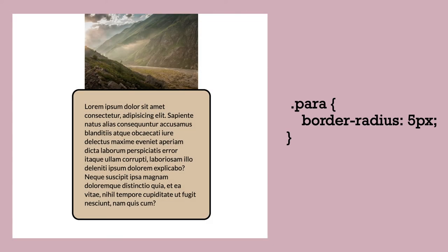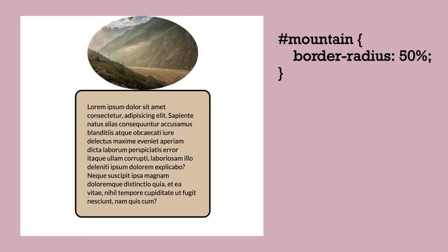We can even round the corners with border radius, such as border-radius: 5 pixels. You could even make a circle with border-radius of 50% if your image was a square. If we apply that to our image — our image was a little wider than it was tall — so it makes an oval.